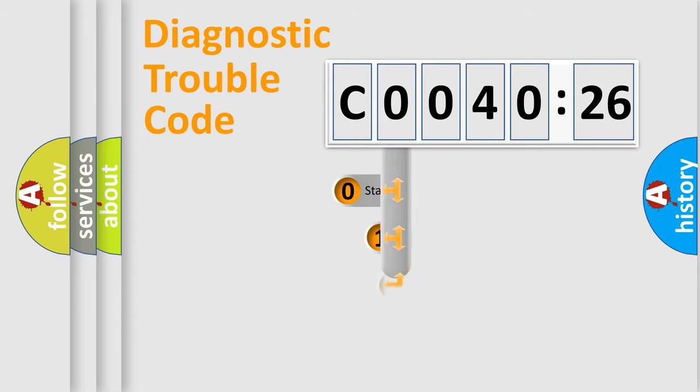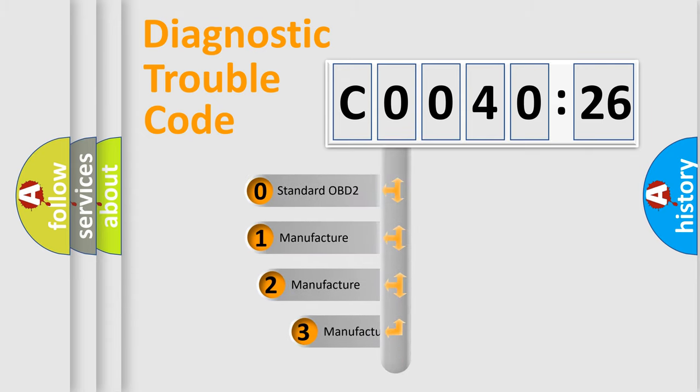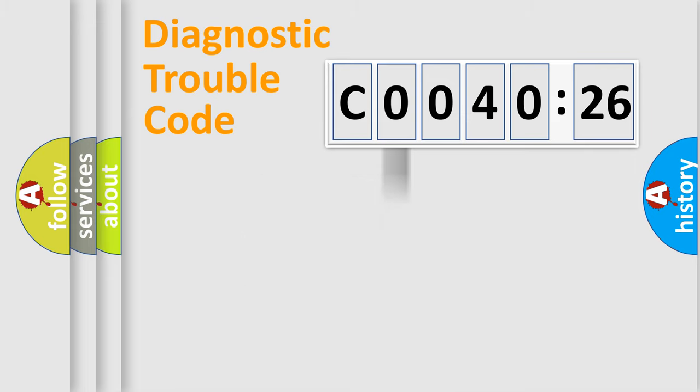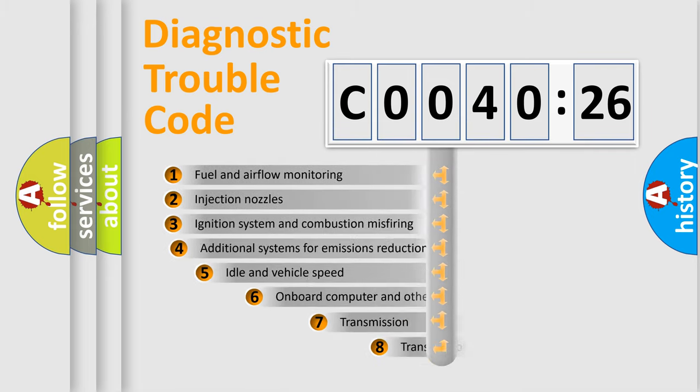This distribution is defined in the first character code. If the second character is expressed as zero, it is a standardized error. In the case of numbers 1, 2, or 3, it is a manufacturer-specific expression of the car-specific error.